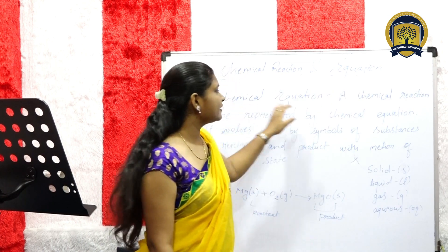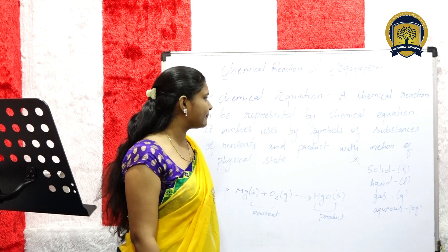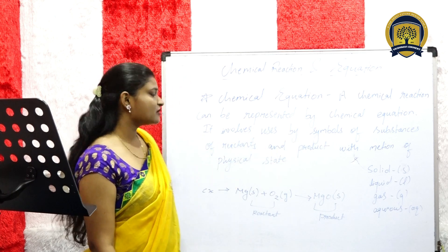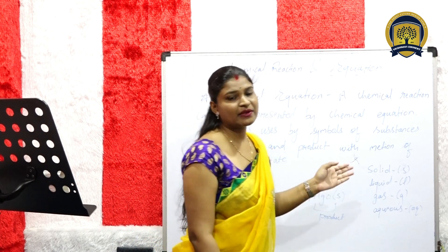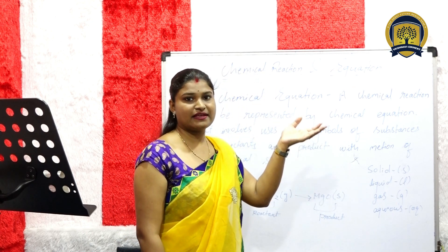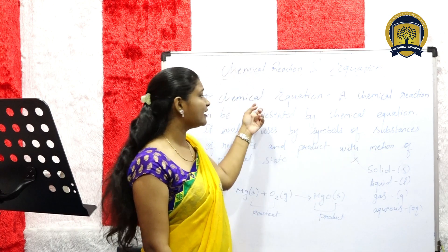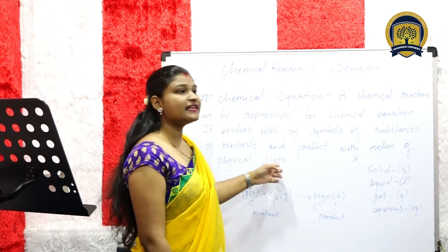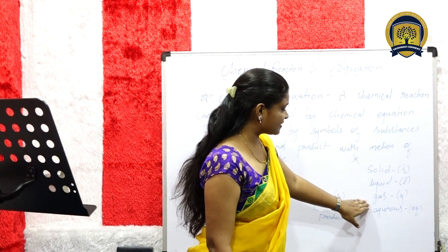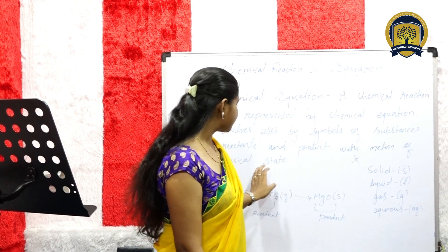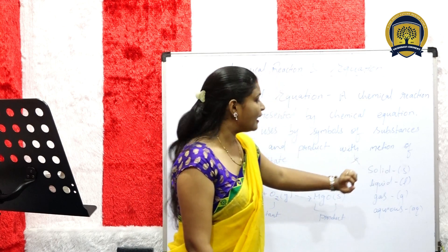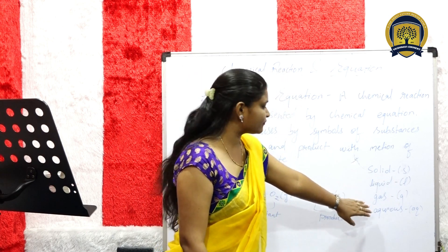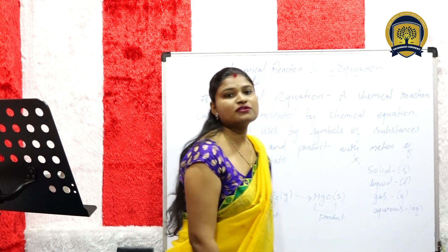Our next topic is chemical equation. What is a chemical equation? Chemical reaction can be represented by a chemical equation. It involves uses of symbols of substances of reactant and product with mention of physical state. When we have a chemical reaction, it is difficult to write it as words, so we give a chemical equation to understand it better. Physical state means solid, liquid, gas, and aqueous. If a substance is in solid state, we write S in brackets; if liquid, we write L in brackets; if aqueous, we represent it with the aqueous symbol.